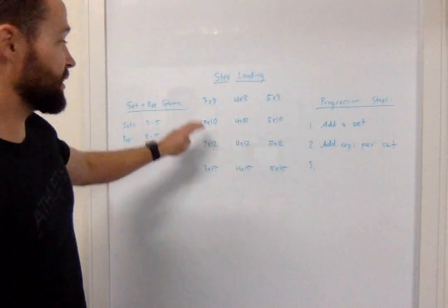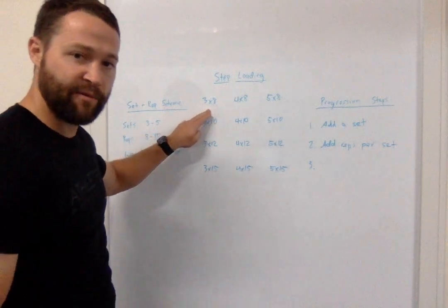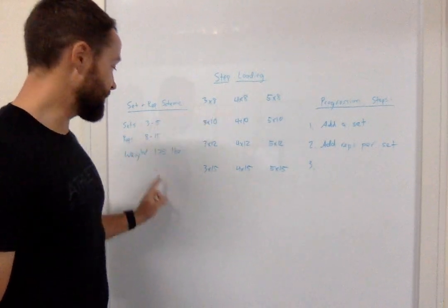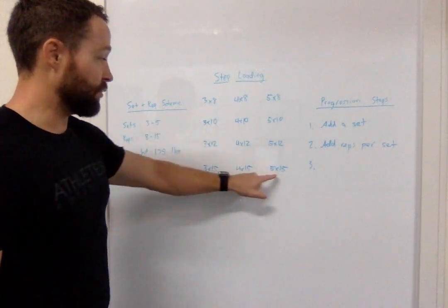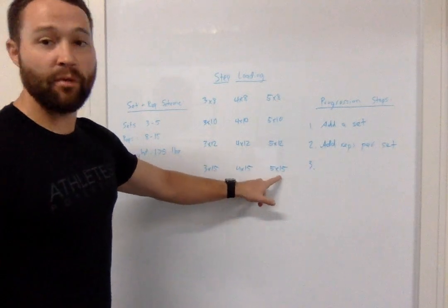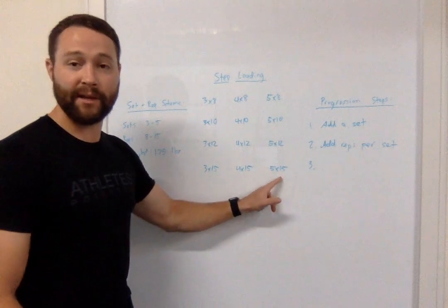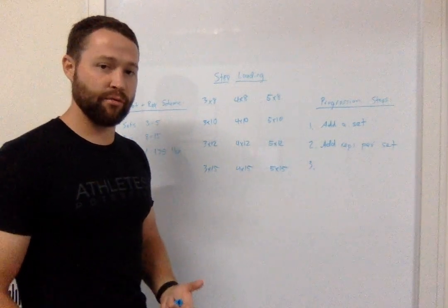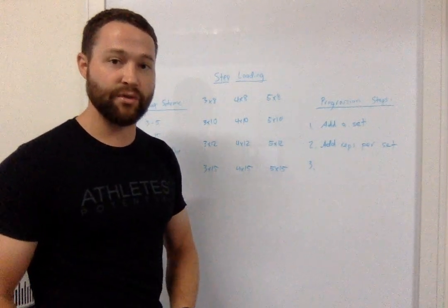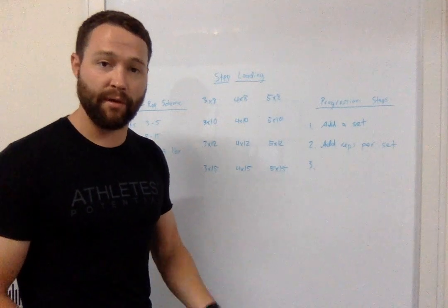Now if you notice we've gone from a total of twenty four reps with 175 as our weight to way more than that here at five by fifteen. So by the time we hit this point we can be pretty sure that we're ready to progress in weight which is usually where people get in trouble if they're progressing in too quickly.